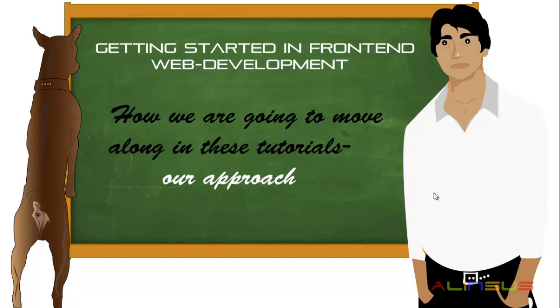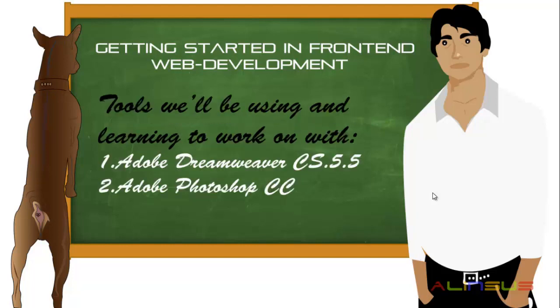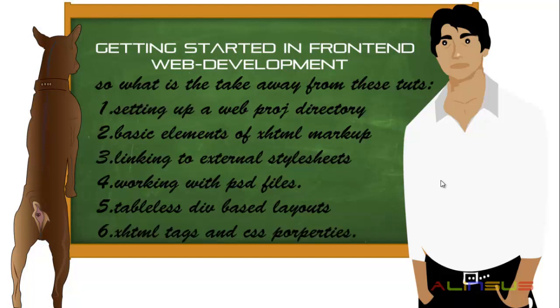In these tutorials we will be moving along in a project based approach to hand code a Photoshop markup into a browser renderable XHTML markup, at the same time stylizing our markup using a separate CSS file. I'll be discussing every HTML tag and CSS property used as you move along. I will be using Adobe Dreamweaver CS 5.5 as my code editor and Adobe Photoshop CC to work with my PSD design markup. So if you don't already have these tools, you might want to download the trial versions from Adobe's website.